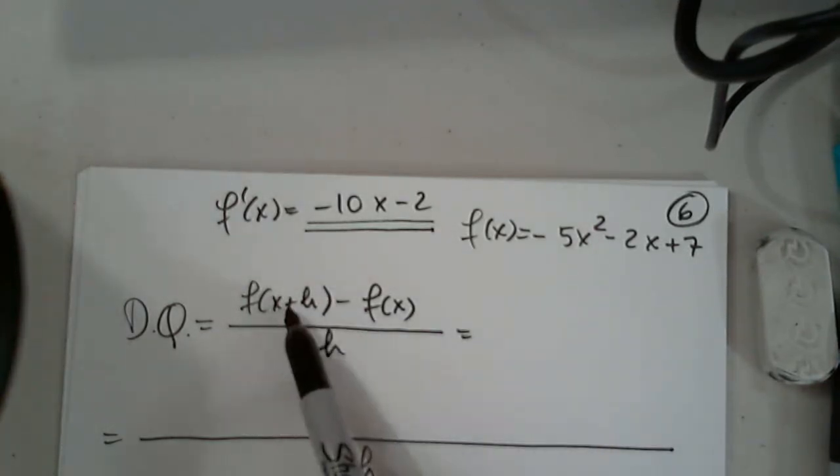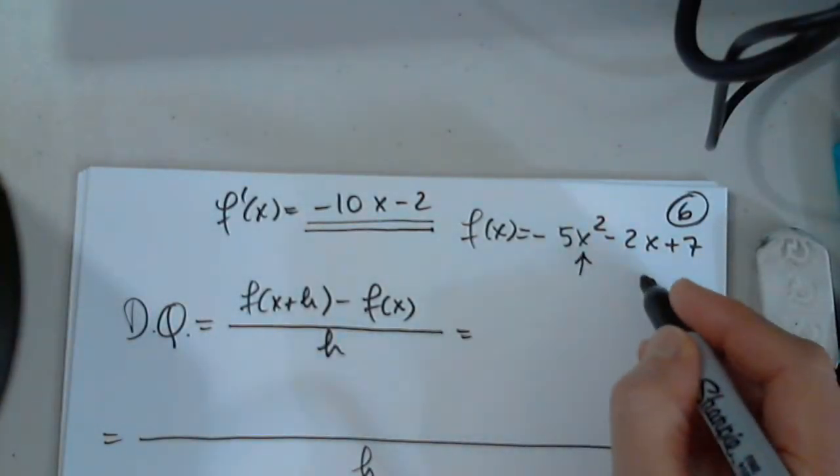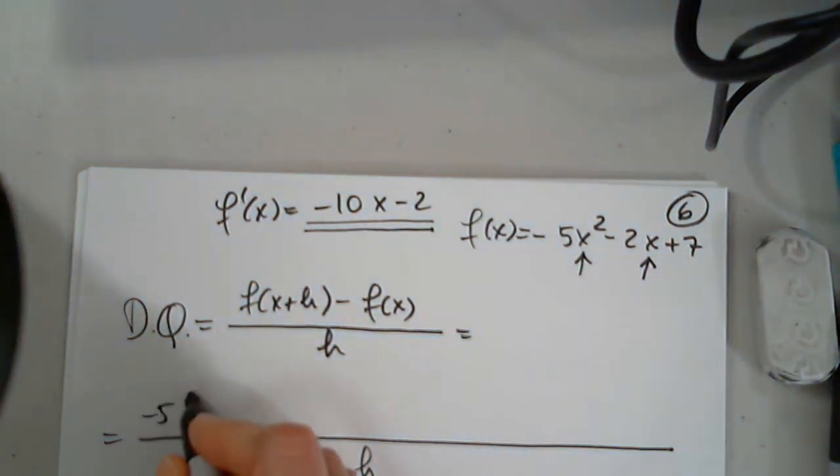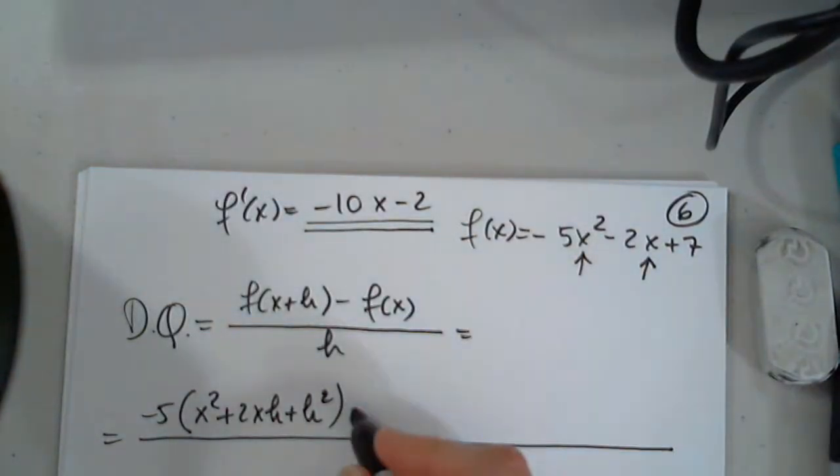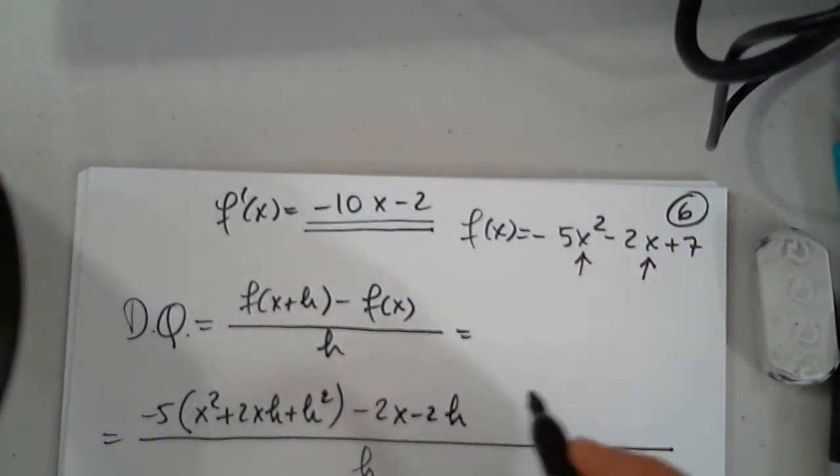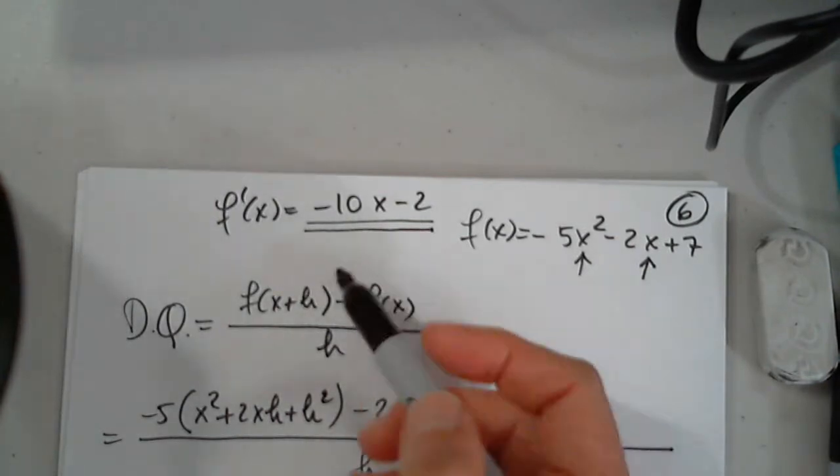So when I plug in x plus h in here and in here, I will have negative 5 times x plus h squared. And I know I get three terms: x squared, 2xh plus h squared. Now, x plus h in here, negative 2x, negative 2h, and plus 7. And this is done.